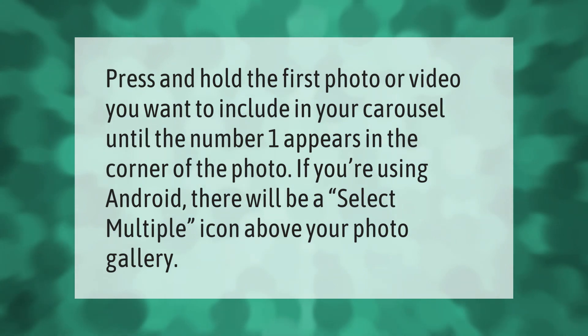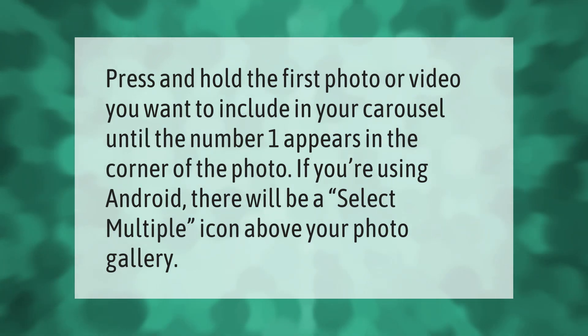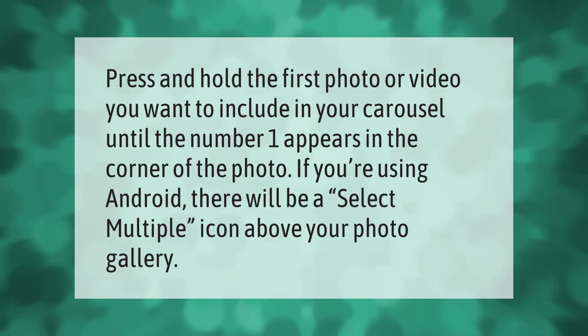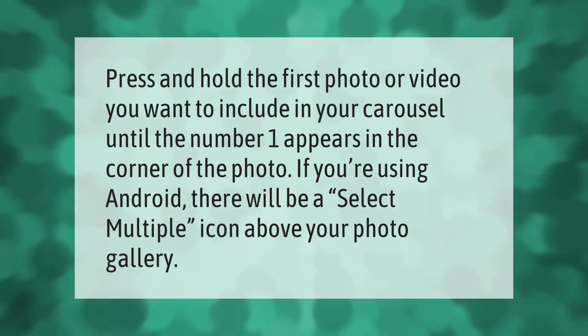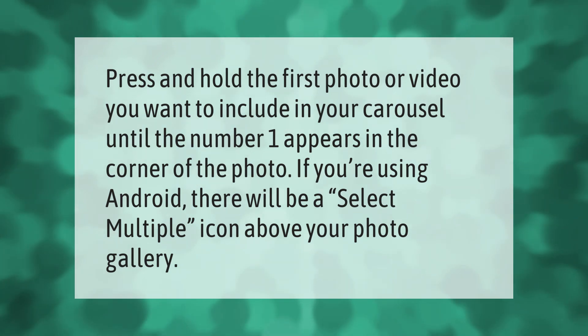Press and hold the first photo or video you want to include in your carousel until the number one appears in the corner of the photo. If you're using Android, there will be a 'Select Multiple' icon above your photo gallery.